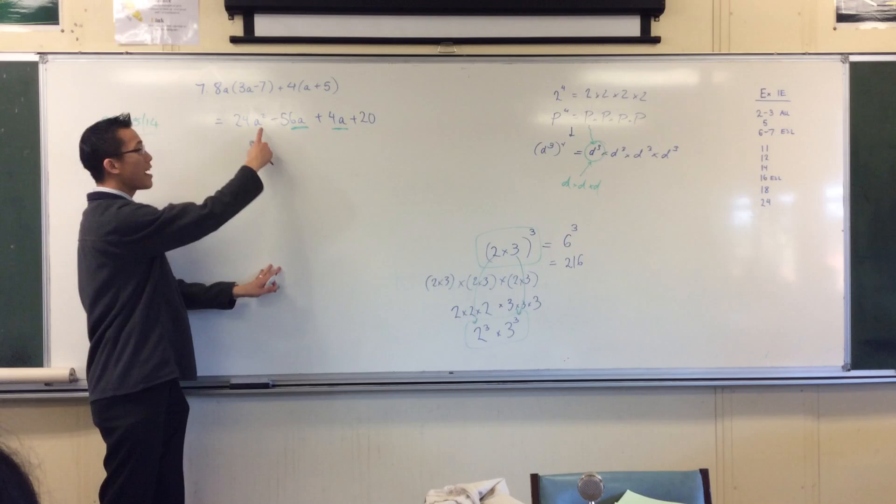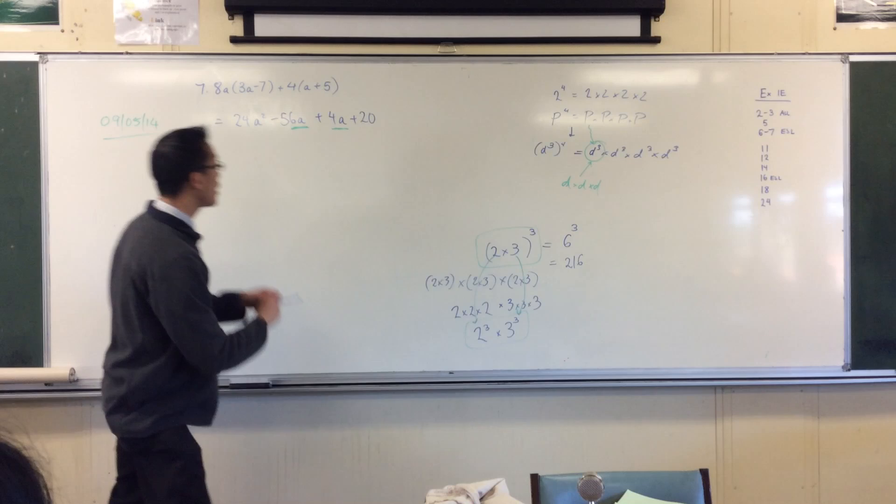Now I know there's other a's here, but this is an a squared. It's different. So we leave him out the front, 24a squared. What's this? Minus 56 and 4. Negative 52 plus 20 and you're finished.